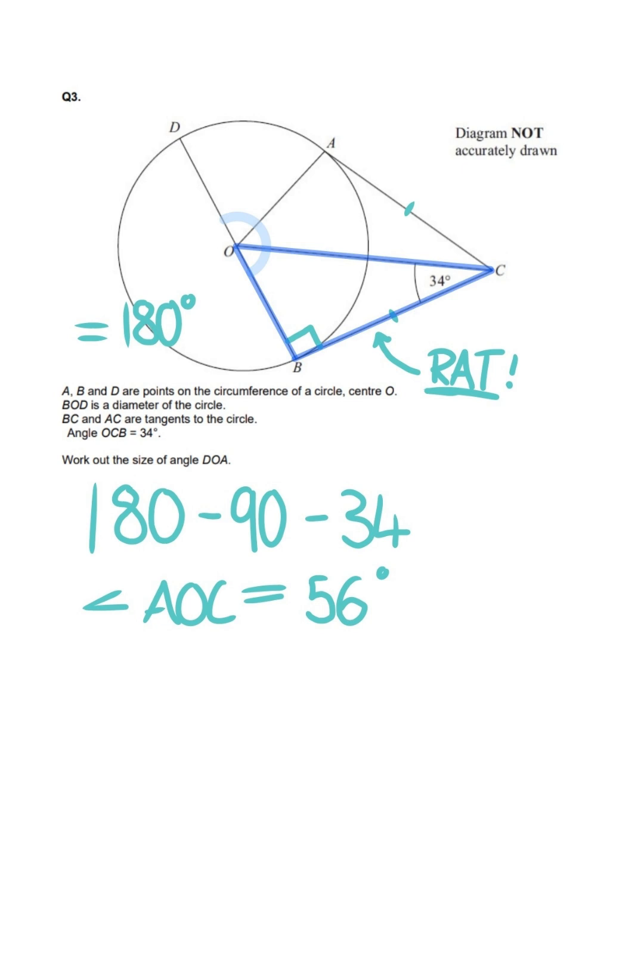Both radii are the same length, and both angles you see here share the length OC. We can now see that both triangles are similar, meaning all the angles inside these triangles will be equal. This also means that AOC is also equal to 56 degrees.